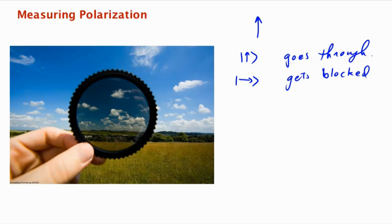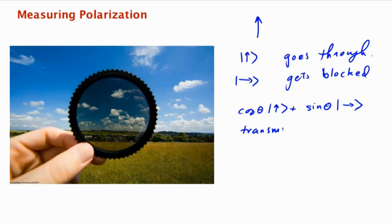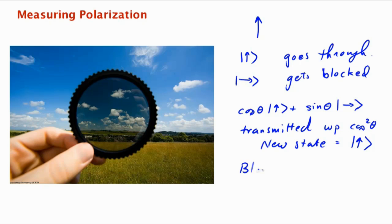But what if it's a superposition of vertical and horizontal? Let's say it makes an angle of theta with vertical, so it's in the state cosine theta times |vertical⟩ plus sine theta times |horizontal⟩. What happens is exactly what you'd expect: it gets transmitted with probability cosine squared theta. And if it gets transmitted, the new state of the photon is exactly vertical polarization.